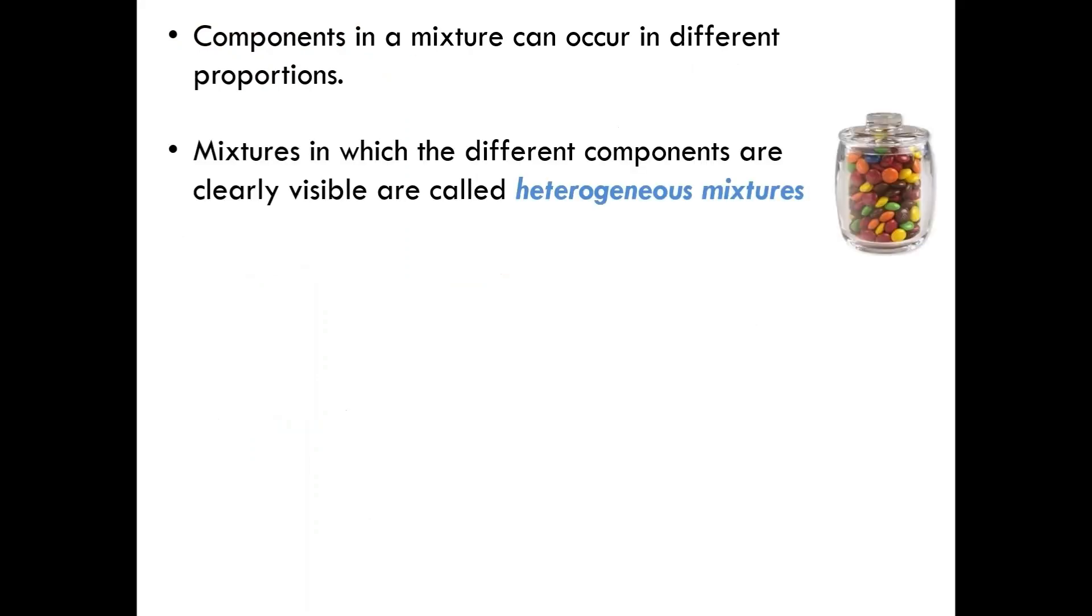Now, of course, the components in a mixture can occur in different proportions. Mixtures in which the different components are clearly visible are called heterogeneous mixtures. The example I have here is a jar of M&Ms, where the variety of M&M colors can be easily seen. A more practical example would be sand mixed in with water. At the shoreline of beaches, sand is oftentimes pulled into the undertow of waves. When sand becomes mixed with the ocean, you can still see the sand suspended in the water, which means that you can see the different components of the mixture, making a sand and water mixture a heterogeneous mixture.